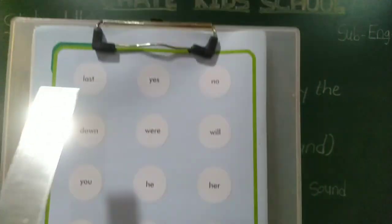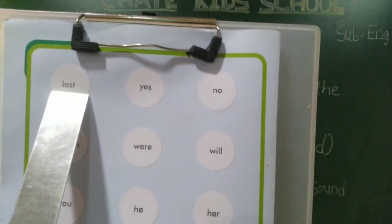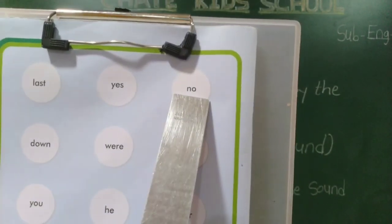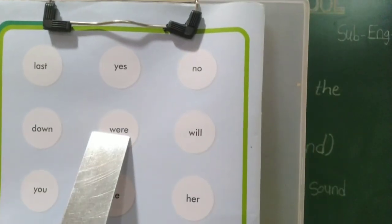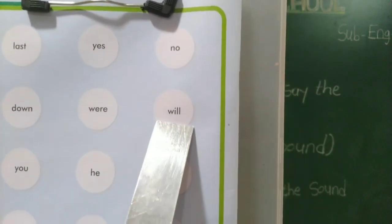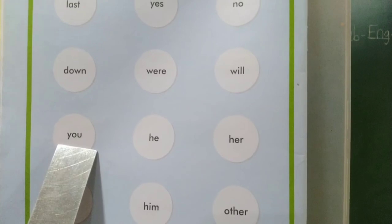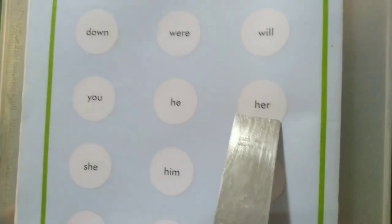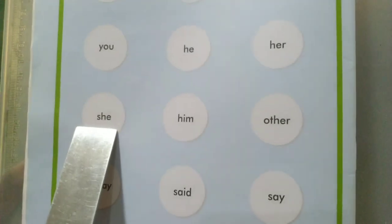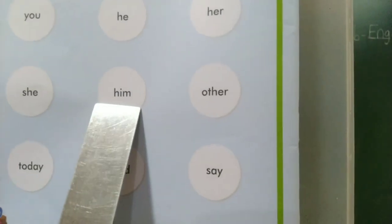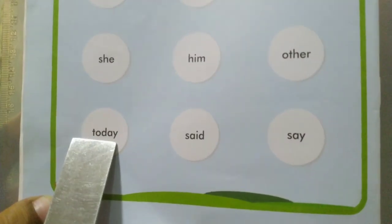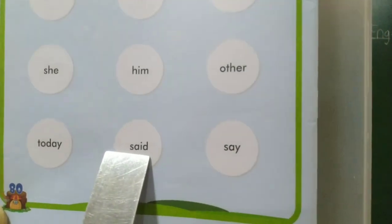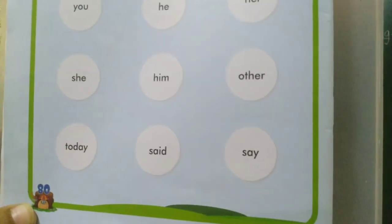Next, page number 80. L-A-S-T — last. Y-E-S — yes. N-O — no. D-O-W-N — down. W-E-R-E — were. W-I-L-L — will. Y-O-U — you. H-E — he. H-E-R — her. S-H-E — she. H-I-M — him. O-T-H-E-R — other. T-O-D-A-Y — today. S-A-I-D — said. S-A-Y — say.